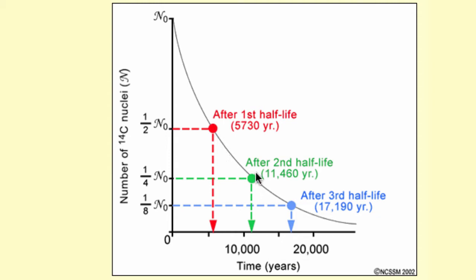Then it takes another half-life for it to decay by half again, and so on. It's exponential decay because every half-life the amount of carbon-14 decreases by half.